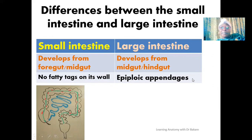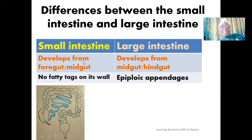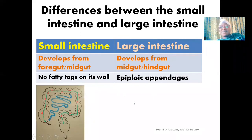Regarding developmental origin, the small intestine and large intestine develop from different regions of the primitive gut. The small intestine develops from the foregut and the midgut, while the large intestine develops from the midgut and the hindgut.